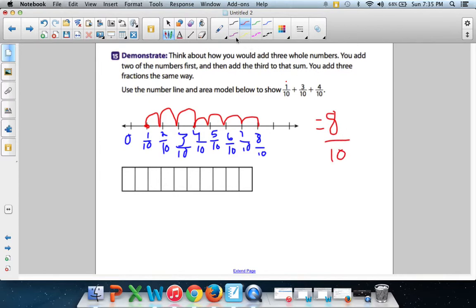Let's do it one more time with the area model - with the coloring, the shading. So we've got 1/10, let's make him purple. So 1/10 gets to be purple. Then we have 3/10, let's make him green. So 3/10 gets to be green. Then we've got 4/10, let's make him blue. So 4/10 gets to be blue - one, two, three, four.